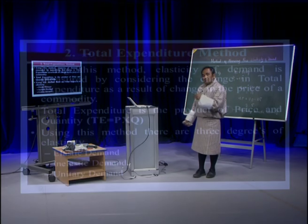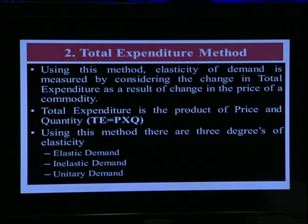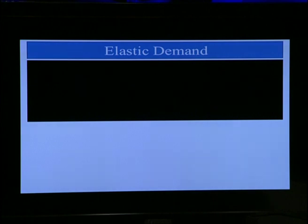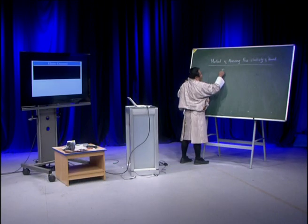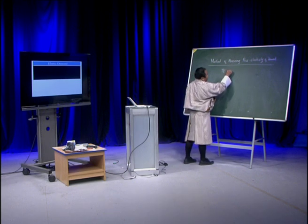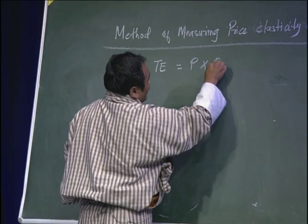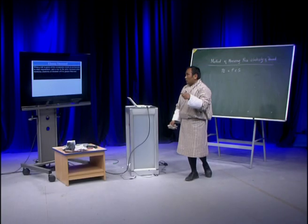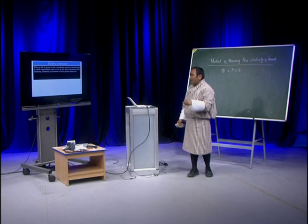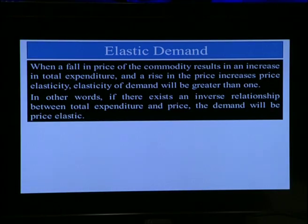Using the total expenditure method, we have three types of price elasticity. First is elastic demand. When a fall in price of a commodity results in an increase in total expenditure, or an increase in price leads to a decrease in total expenditure, elasticity of demand will be greater than 1. When elasticity is greater than 1, it is elastic demand. In other words, if there exists an inverse relationship between total expenditure and price, demand will be price elastic.